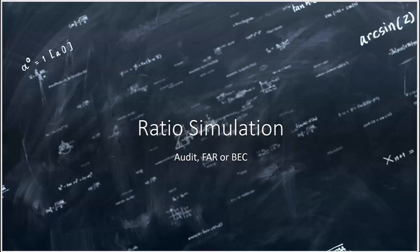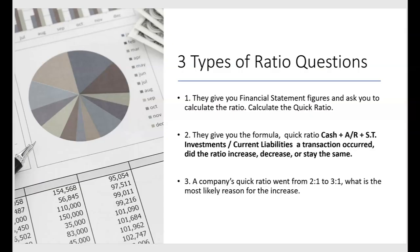Here's a ratio simulation that you could see on Audit, FAR, or BEC. There are three different types of ratio questions. In the first type, the exam gives you the financial statements and asks you to calculate the ratio — for example, calculate the quick ratio. For that type, you need to have the ratio memorized: the quick ratio is the most liquid current assets — cash, receivables, and short-term investments — divided by all current liabilities.